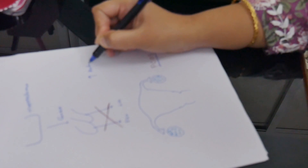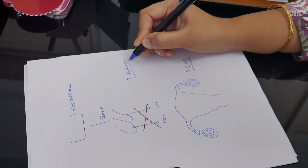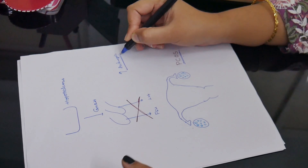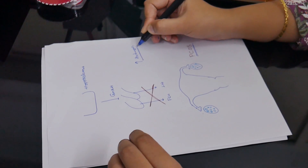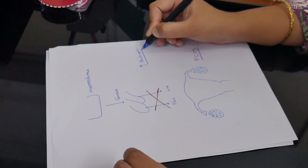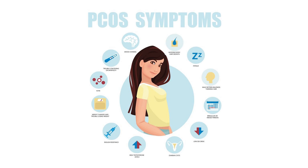In PCOS there is an increase in androgen levels, which is the male sexual hormone. In a normal woman, male sexual hormones are present in a very small amount. This causes ovulatory disorders in PCOS.